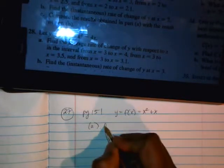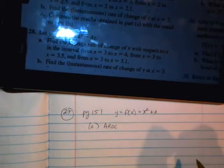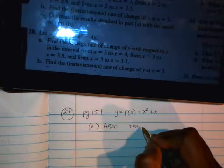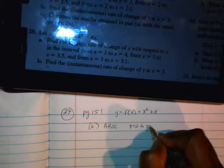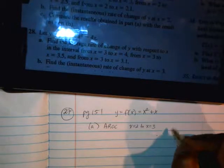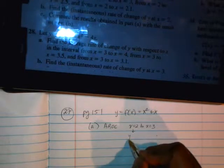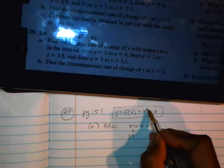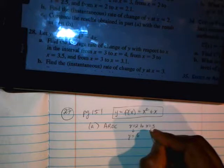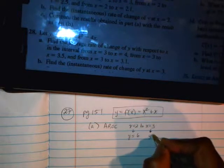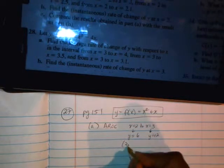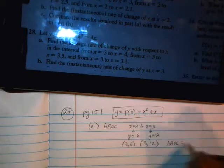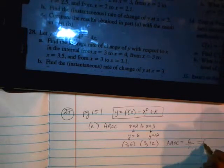Part A, find the average rate of change. And x is from x equals 2 to x equals 3. So what you want to do first is, corresponding to 2, what is the y value? Plug in 2 there. 2 squared is 4 plus 2 is 6. Plug in 3 there. 3 squared is 9 plus 3, y is 12. So what you have are ordered pairs, 2, 6 and 3, 12. So the average rate of change is 12 minus 6 over 3 minus 2. You just get 6.